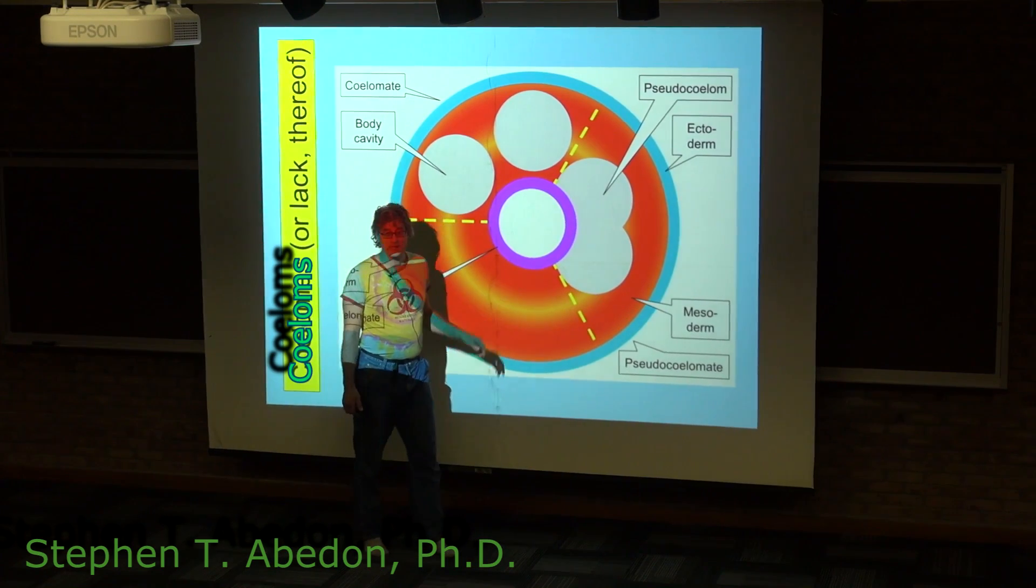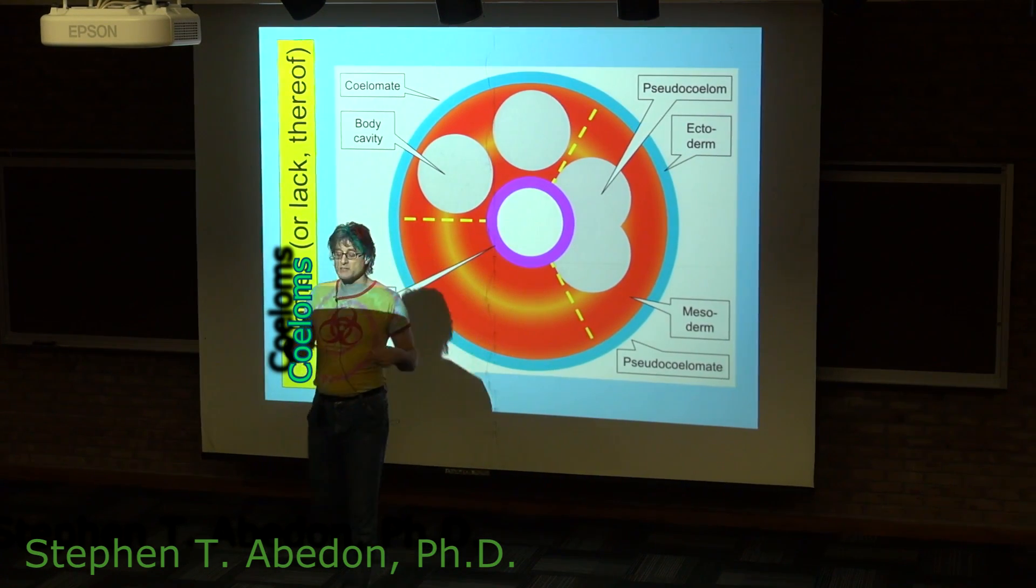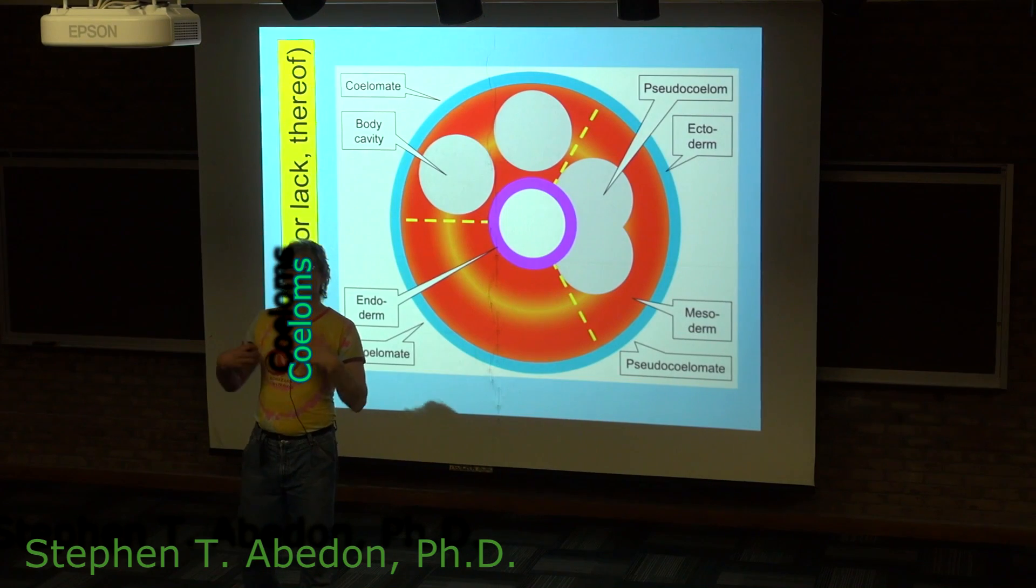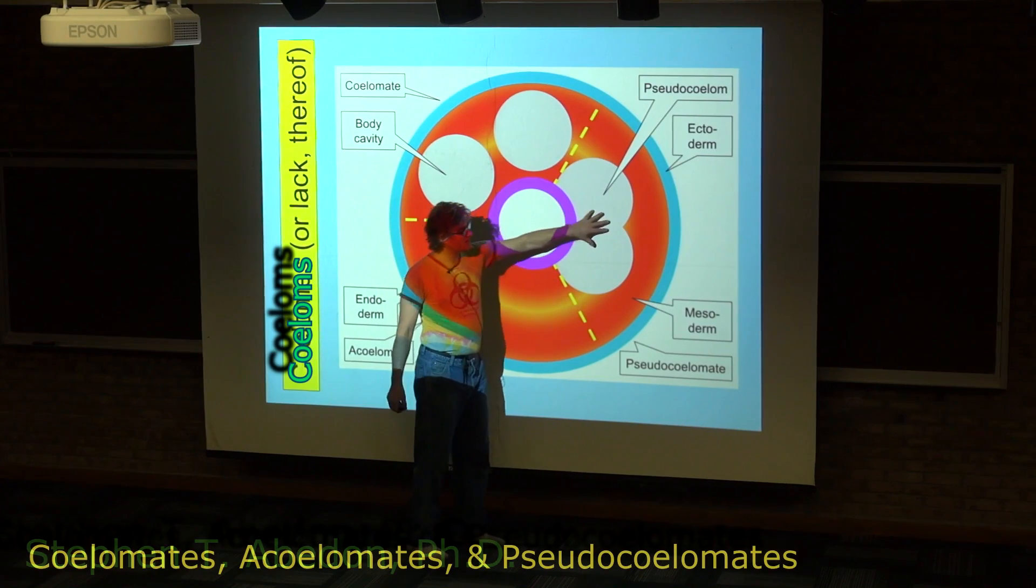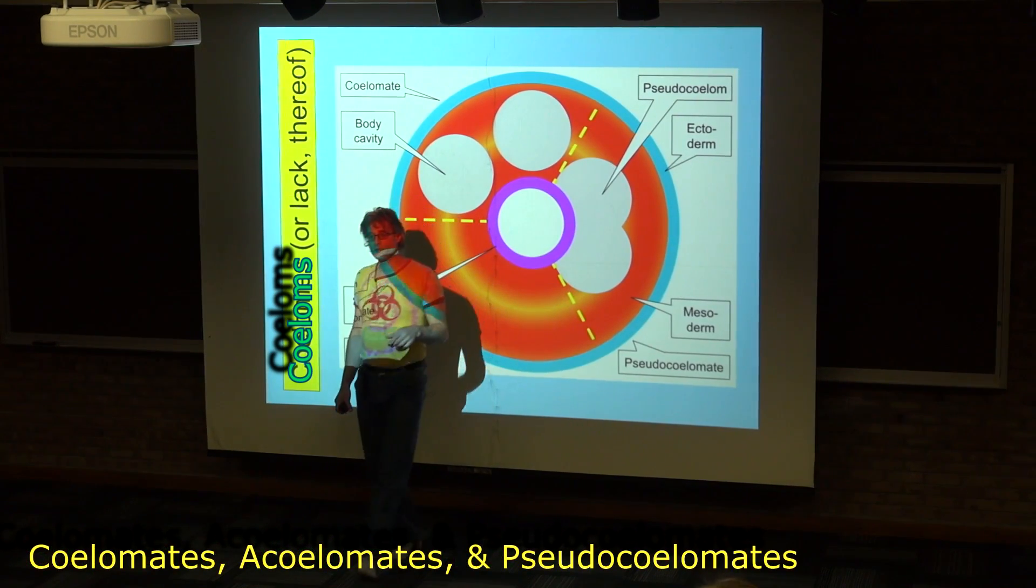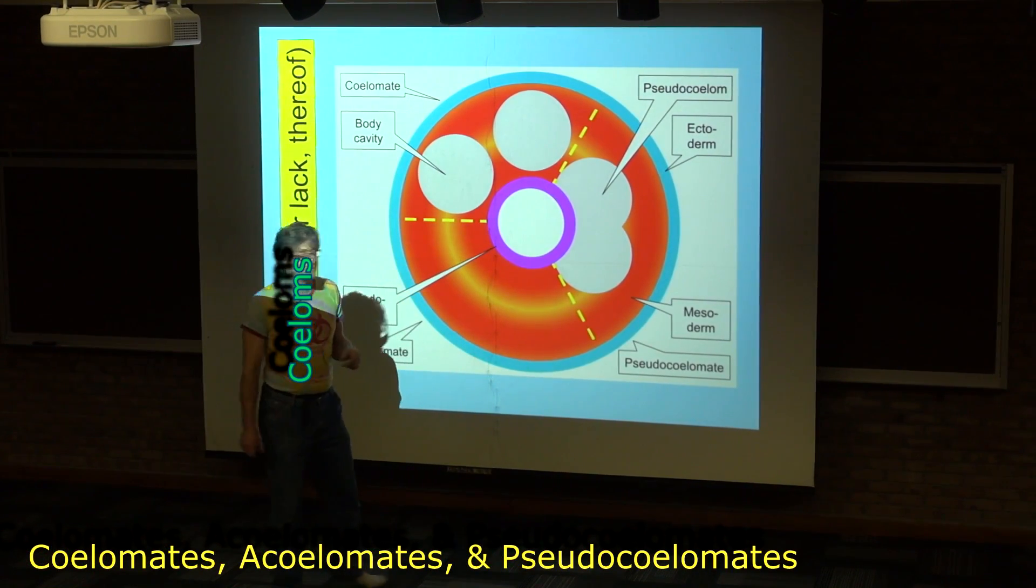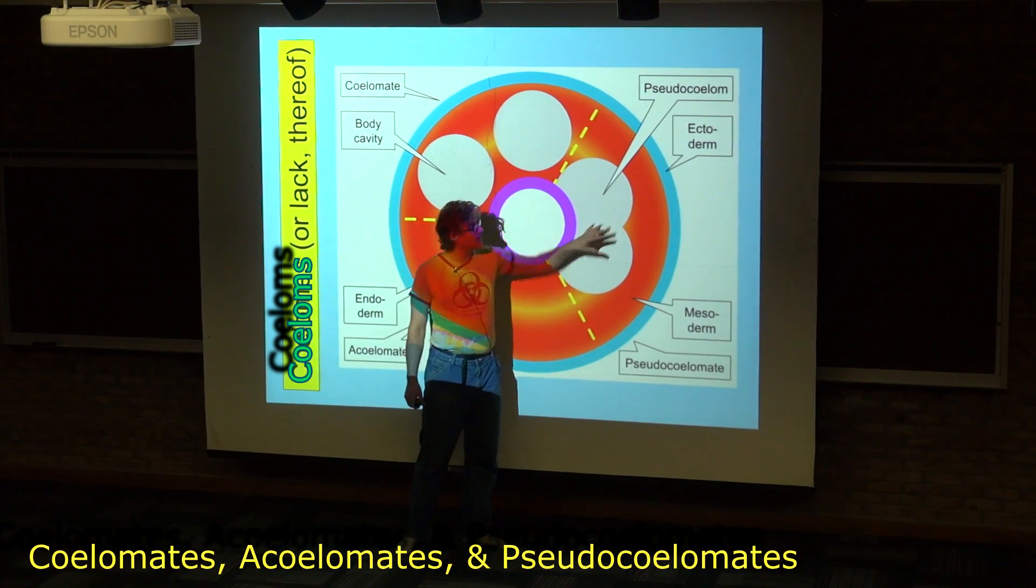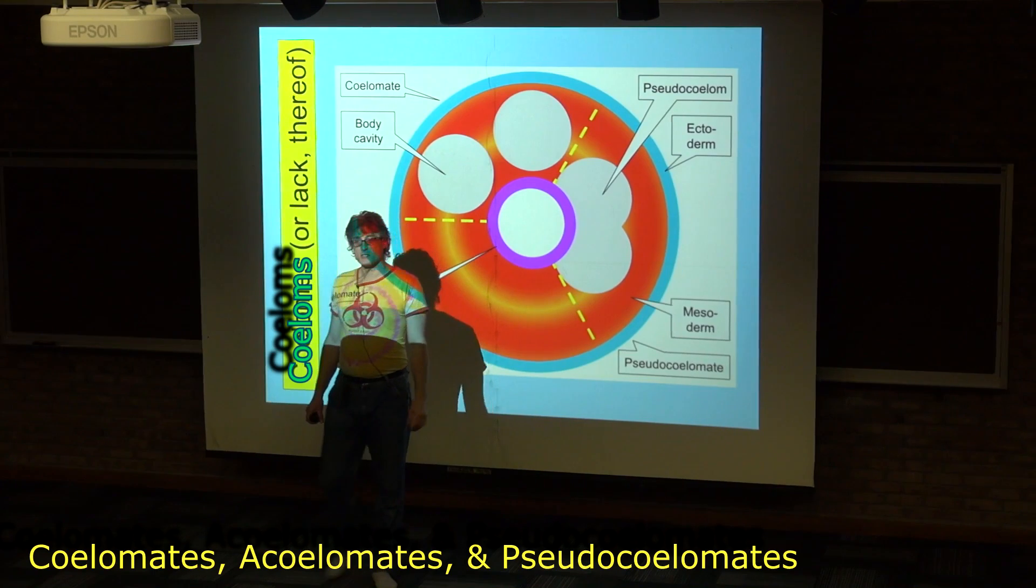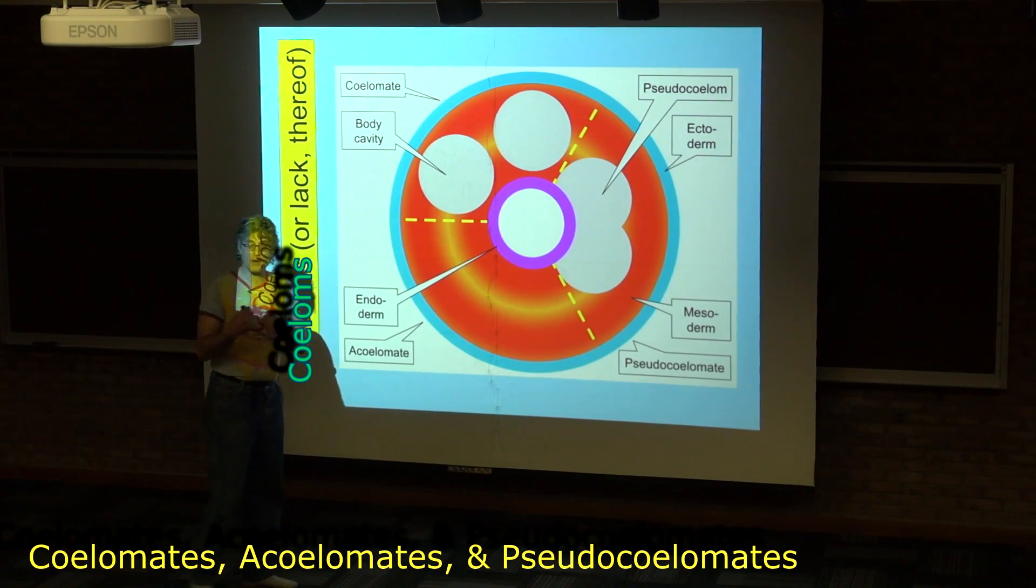The flatworms have a gastrovascular cavity, so basically the circulation of nutrients occurs within their digestive system. In the roundworms as well as the rotifers, they have both a mouth and an anus. Any distribution of stuff throughout their body occurs within this pseudocoelom, this body cavity.